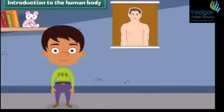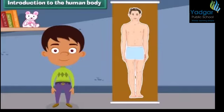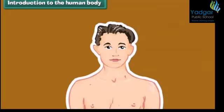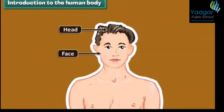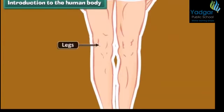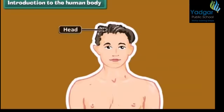Can anybody tell me the names of various parts of our body? The main parts of our body are head, face, neck, hands, stomach and legs. As we can see here, the head is the uppermost part of the body. We find hair present on the head.